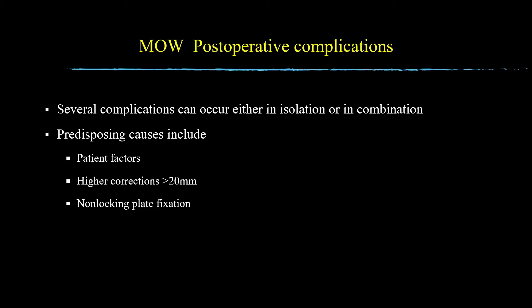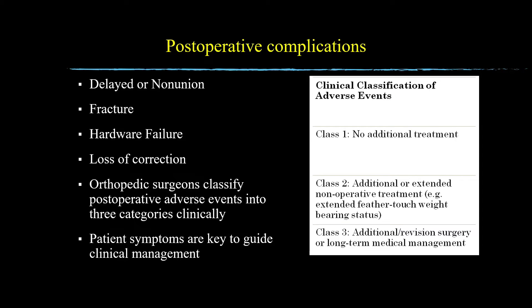Several complications can occur following MOW-HTO either in isolation or combination. Factors that contribute to post-operative complications include higher corrections greater than 20 millimeters, non-locking plate fixation, and several patient-related causes including smoking, diabetes, obesity, and non-compliance with weight-bearing protocols. The main complications of HTO surgery include delayed or non-union, fracture, hardware failure, and loss of correction. Many orthopedic surgeons define delayed radiographic union as absent or incomplete radiographic union at three months post-op with complete union by six months post-op. Radiographic non-union is usually defined as the absence of substantial radiographic union at six months post-op.